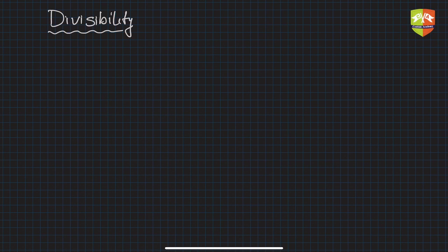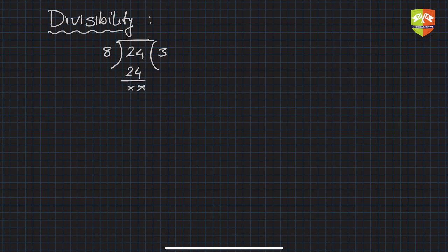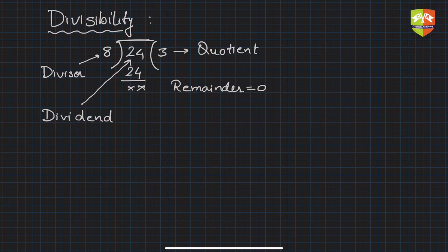Hello friends, welcome to the session on number theory. In this session we are going to talk about divisibility. Since childhood we have been talking about the process of division — a process of finding a quotient and a remainder. For example, if you divide 24 by 8, you get a remainder of 0. The 3 is the quotient, 8 is called the divisor, and 24 is called the dividend.